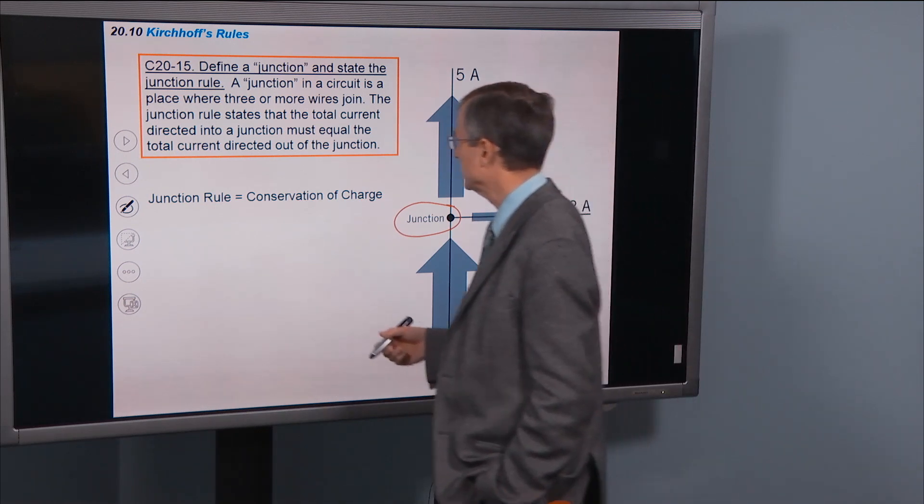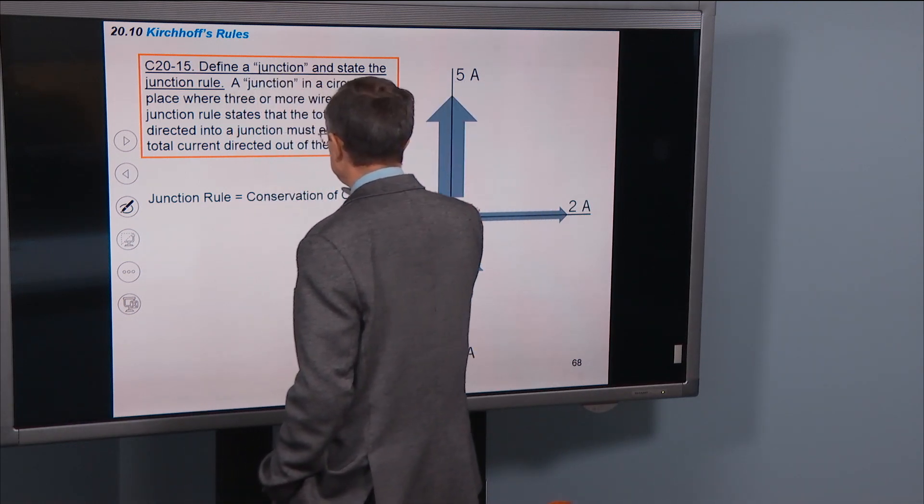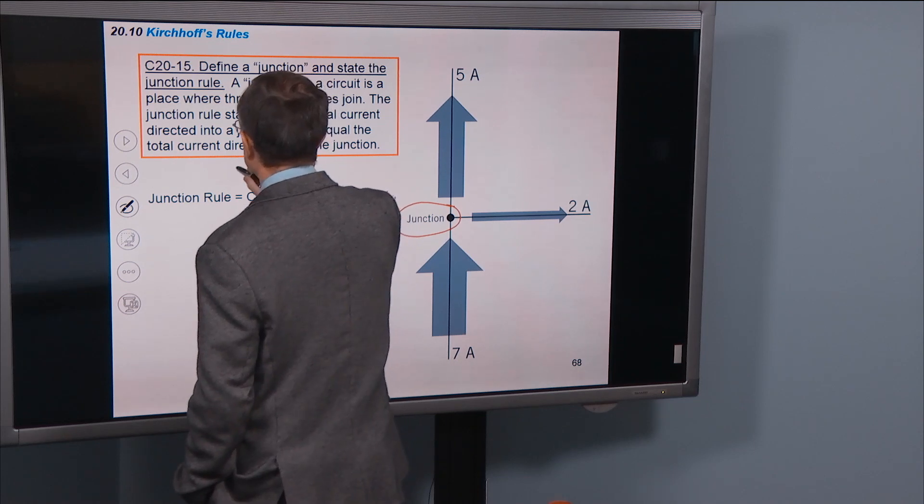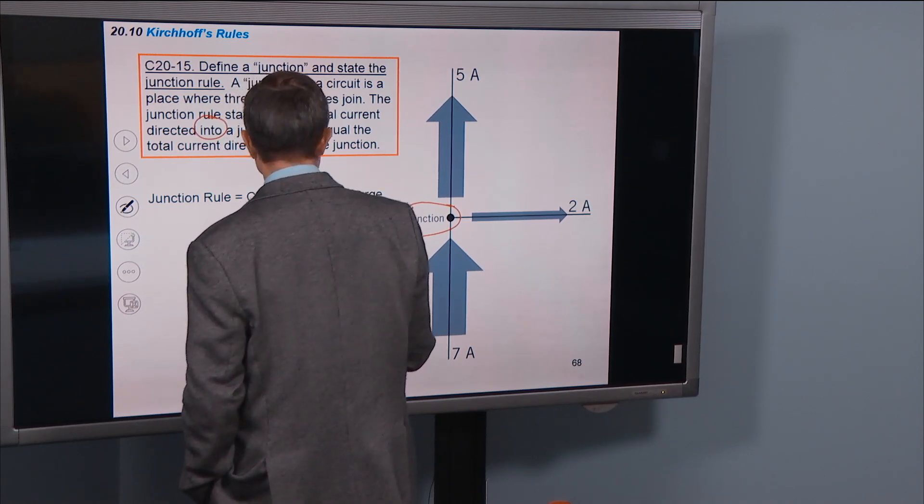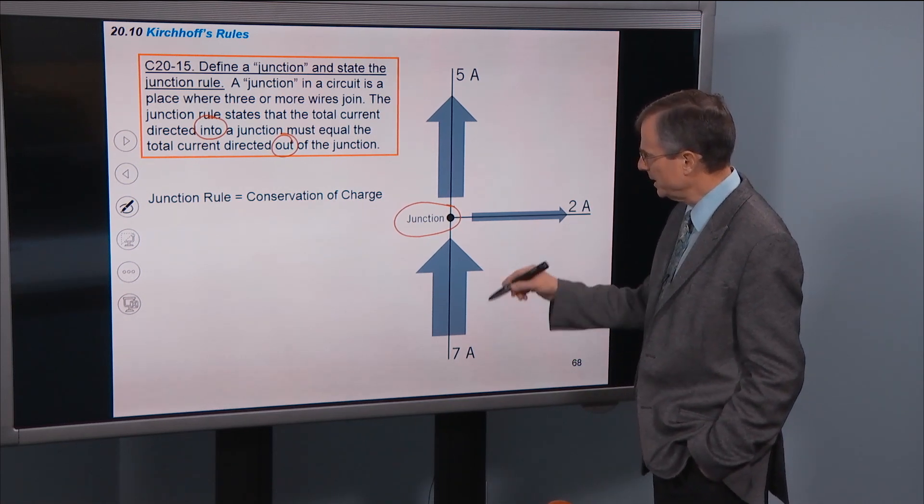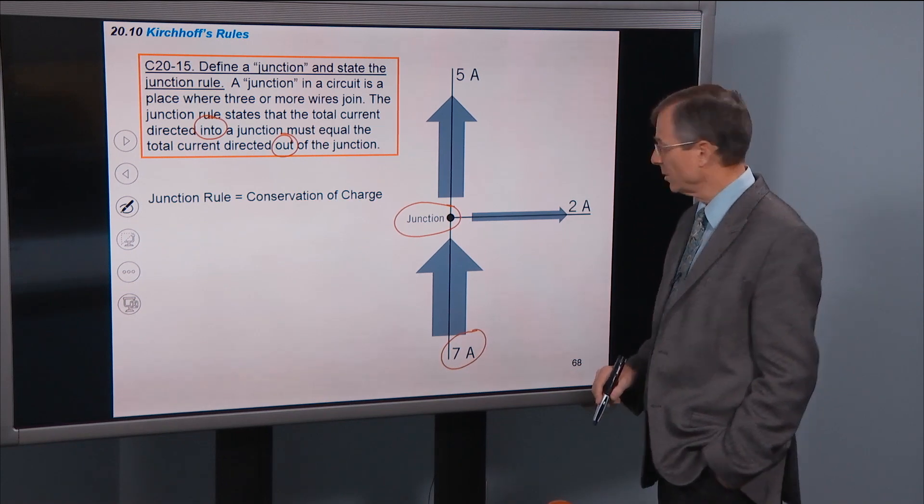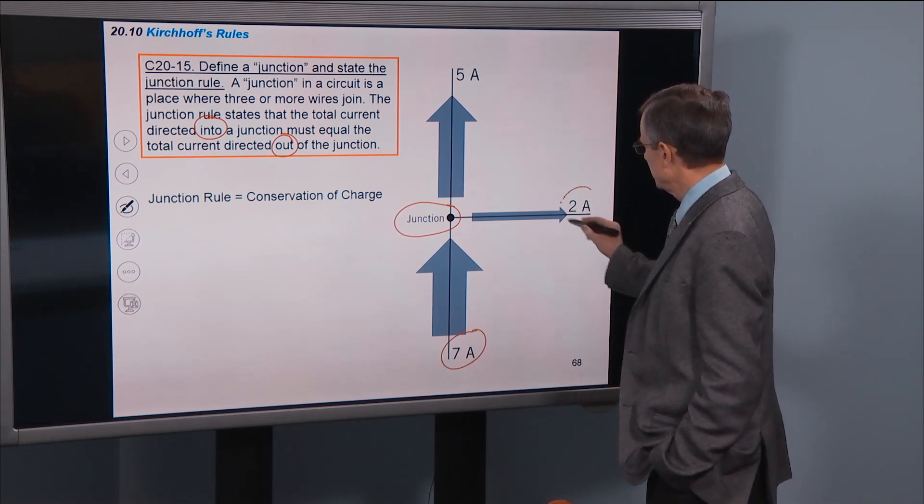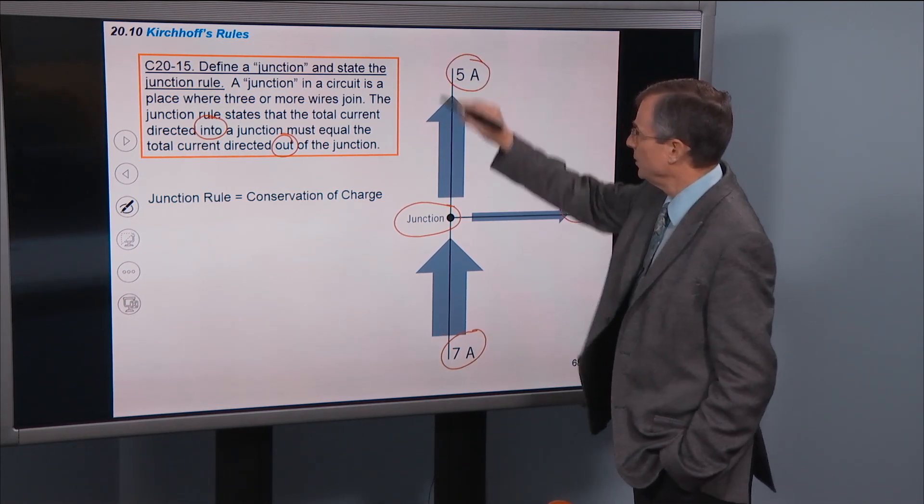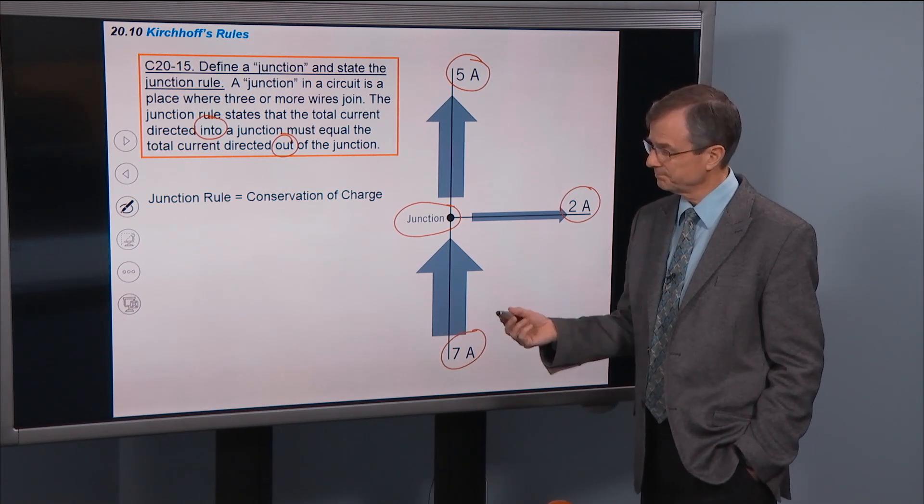And the junction rule states that the total current directed into a junction must equal the total current directed out. Total current in is total current out. In this particular case what current goes into the junction? 7 amps. What's the total current out? 2 amps plus 5 amps. Does 2 plus 5 add up to 7? Yes they do.